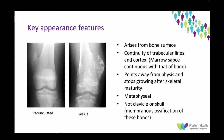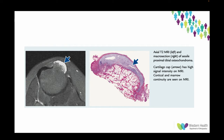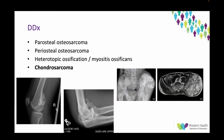It always points away from the physis, stops growing after skeletal maturity, and is usually metaphyseal-based. It's typically not found in the clavicle or skull because these are bones that undergo membranous ossification. This MRI slice shows the characteristic cartilage cap, and you can see on the histology slice as well that lighter blue cartilage cap.